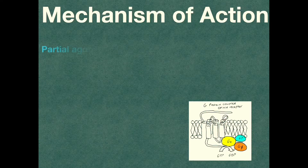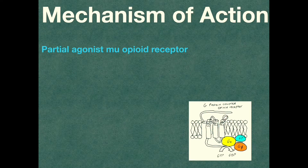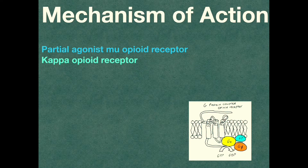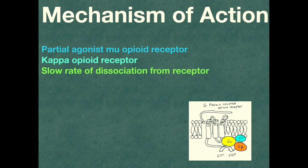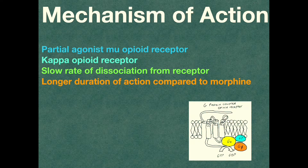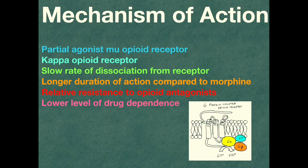Buprenorphine is a partial agonist of the mu opioid receptor. It also has affinity for the kappa opioid receptor. A key property is its slow rate of dissociation from the opioid receptor, which may explain the longer duration of action compared to morphine, the relative resistance to opioid antagonists, and the lower level of drug dependence compared to pure mu agonists.